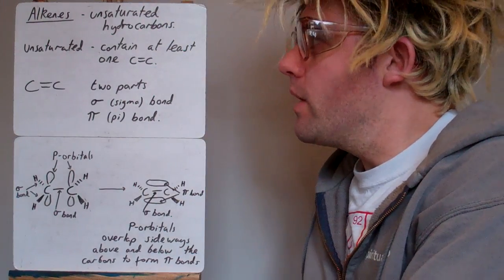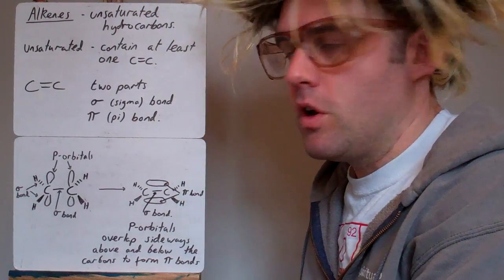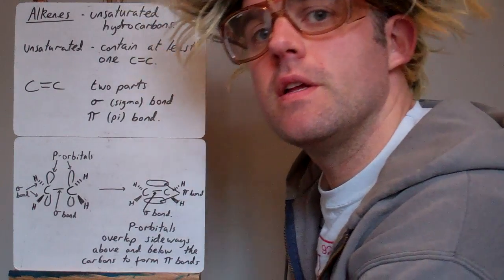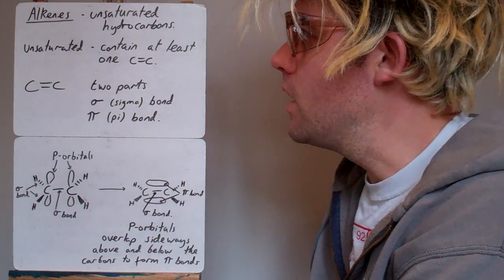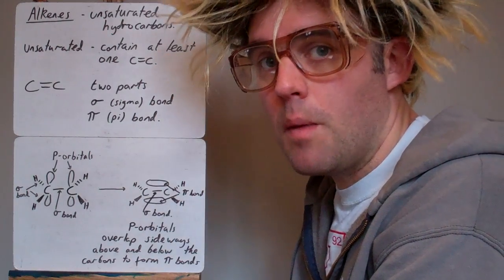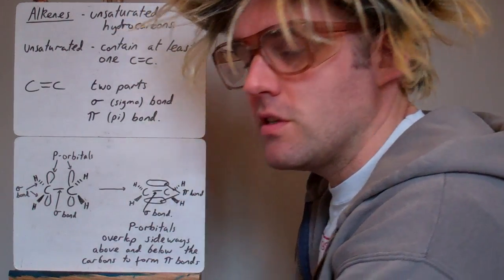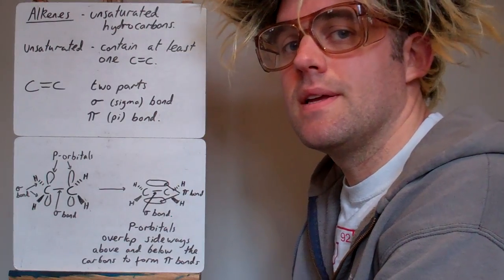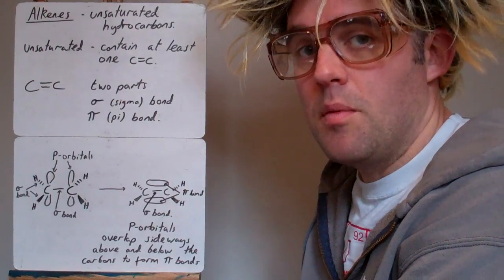Okay, the alkenes. Alkenes are unsaturated hydrocarbons. Hydrocarbons because they only contain hydrogen and carbon atoms. Unsaturated because they contain at least one carbon to carbon double bond. It's not enough to say they contain a double bond, you must say it's a carbon to carbon double bond.